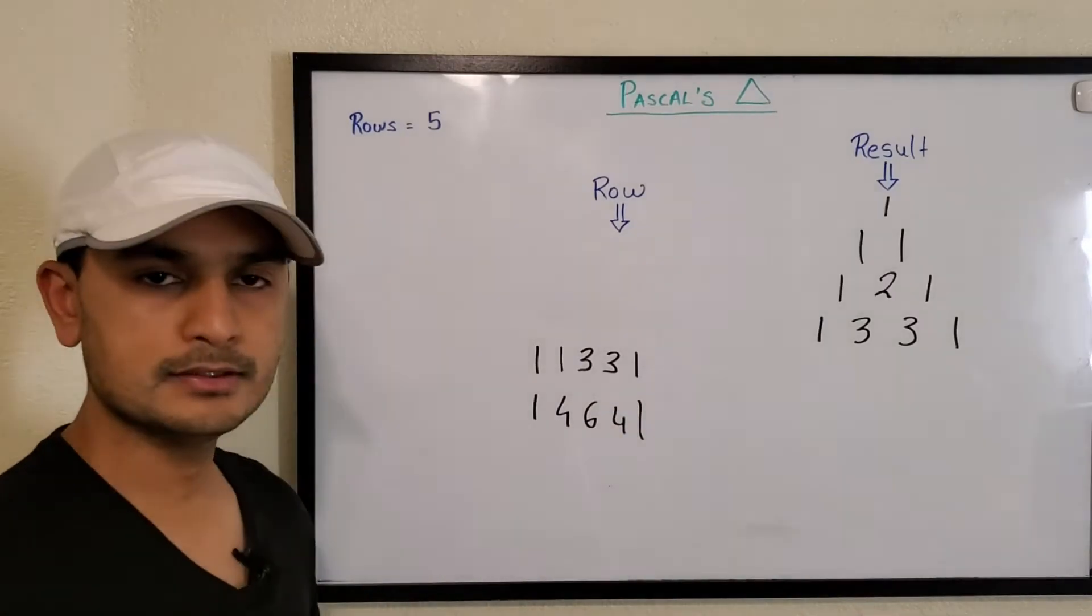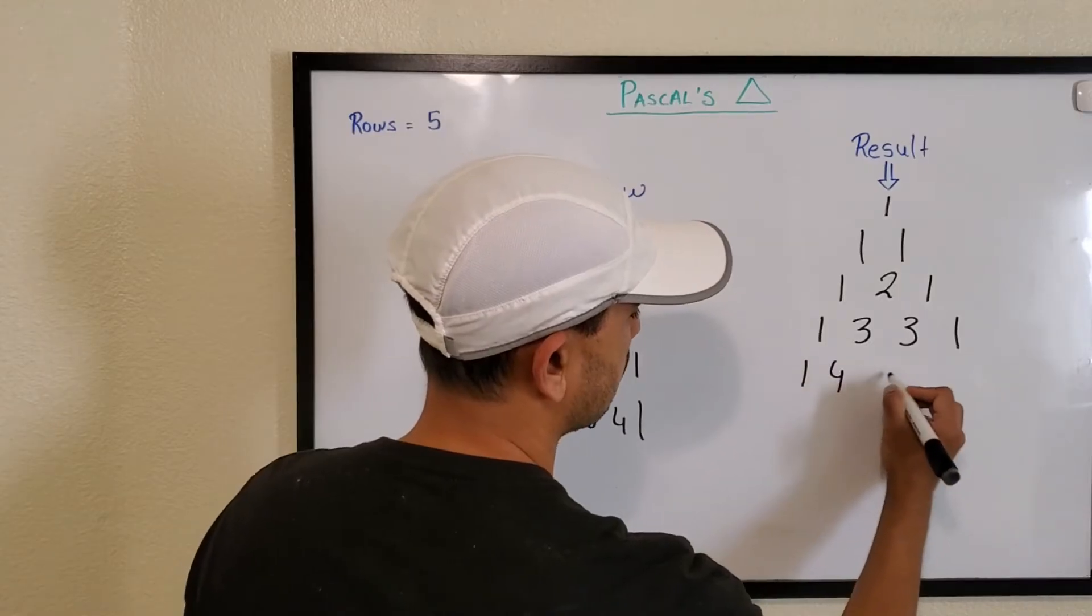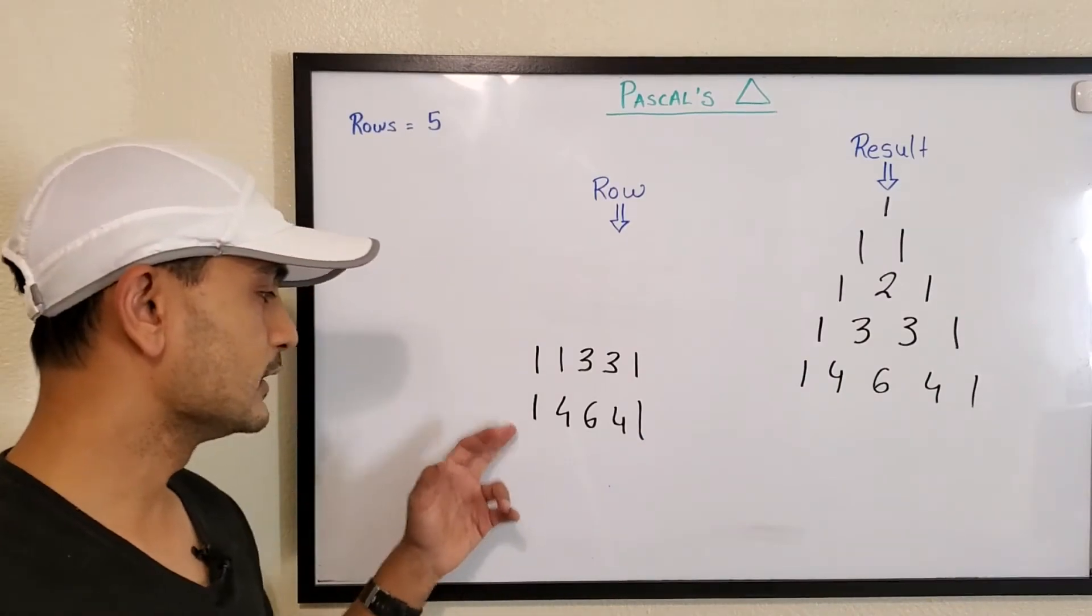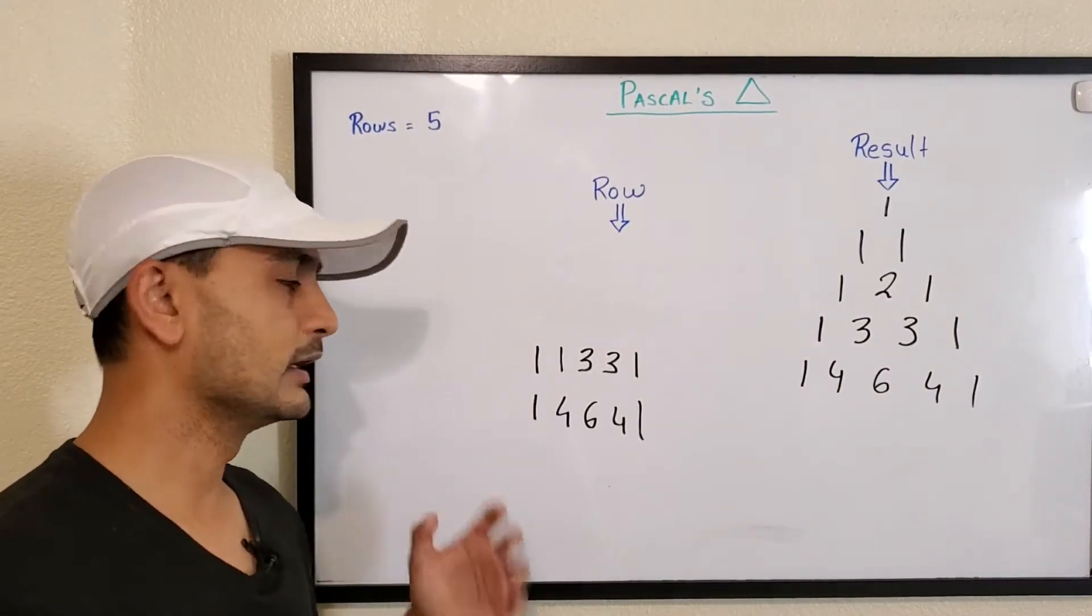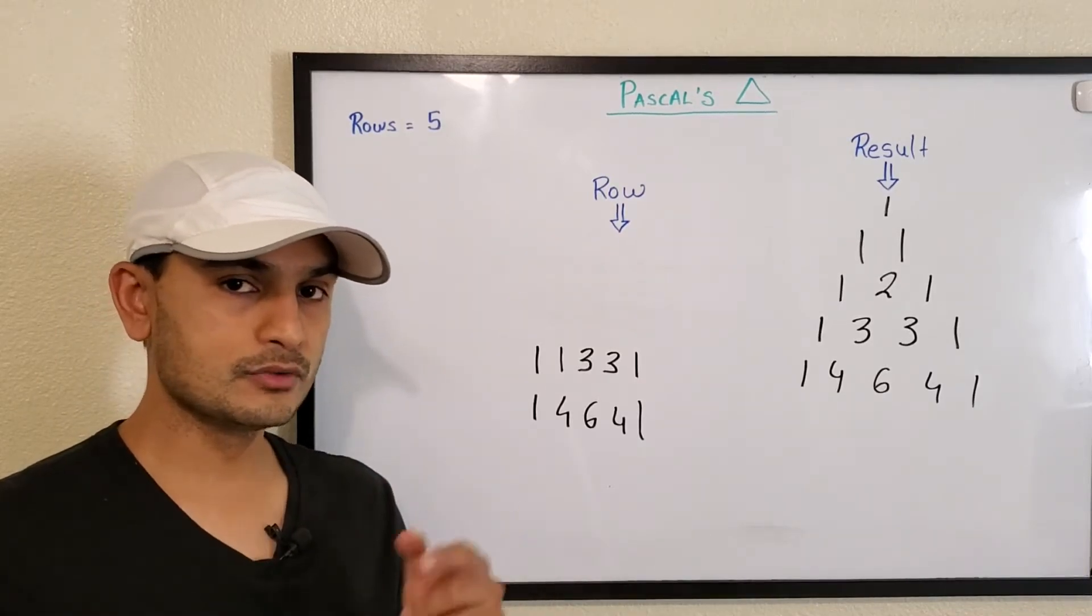And that's our fifth row: one four six four one. And likewise if we keep doing that we'll keep getting the next rows. So that's it guys, let's go to Visual Studio Code.